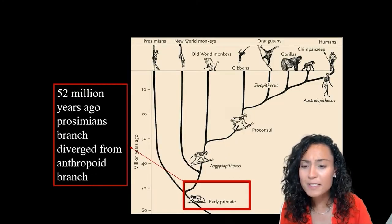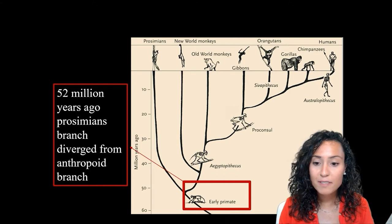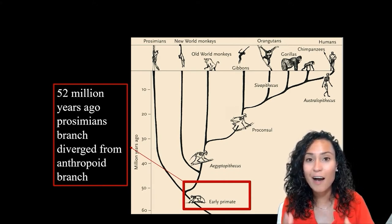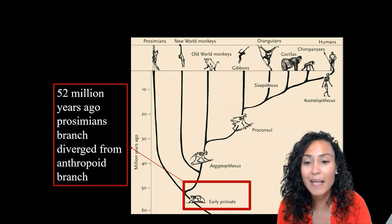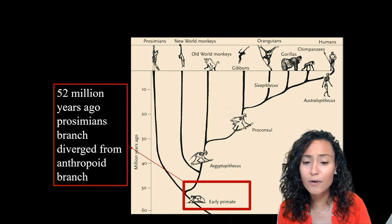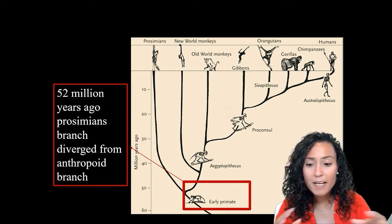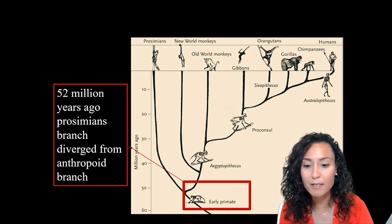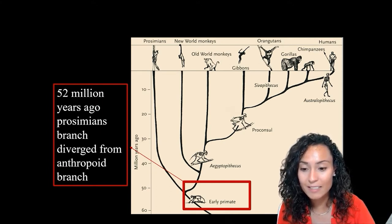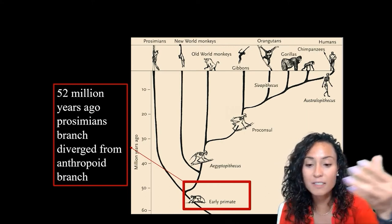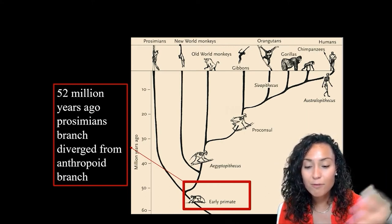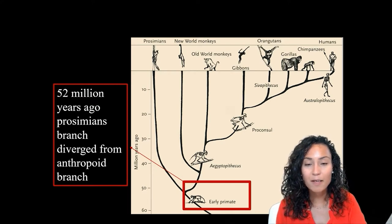Darwin basically argued that humans, apes, monkeys, and prosimians all share a common original primate ancestor. Sometime around 52 million years ago, prosimians break away from these other primate groups, and our direct primate ancestors go on a totally different set of evolutionary journeys from these early prosimian ancestors.